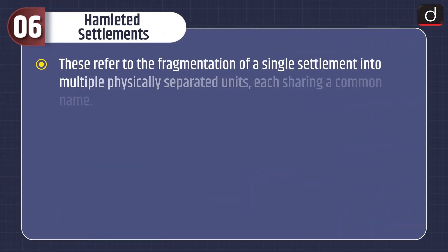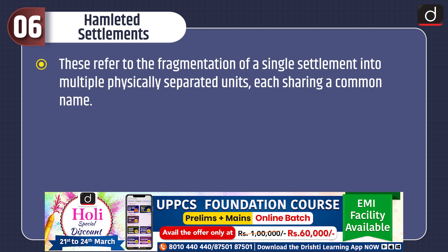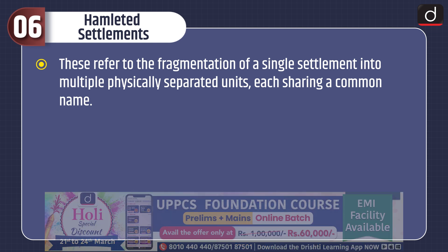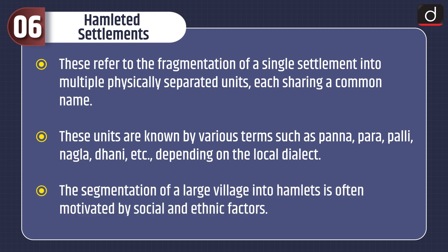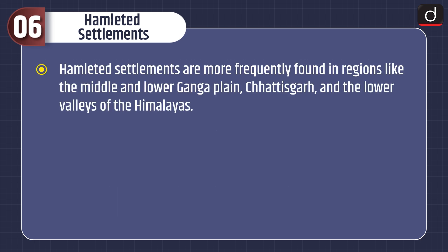Hamleted settlements refer to the fragmentation of a single settlement into multiple physically separated units, each sharing a common name. These units are known by various terms such as Panna, Para, Palli, Nagla, Dhani, etc., depending on the local dialect. The segmentation of a large village into hamlets is often motivated by social and ethnic factors. Hamleted settlements are more frequently found in regions like the middle and lower Ganga plain, Chhattisgarh, and the lower valleys of the Himalayas.